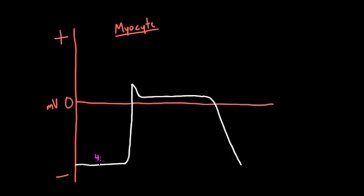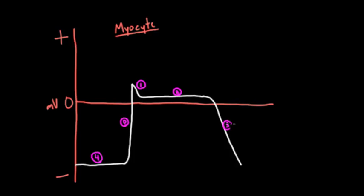These are the phases of an action potential, and they're numbered: phase four, phase zero, phase one, phase two, and phase three. So those are the normal phases and how we count off what the action potential looks like.